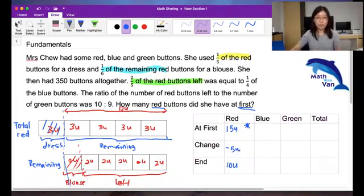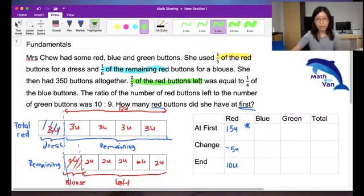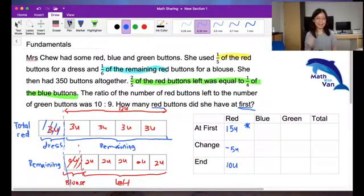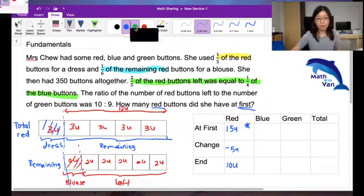What does this two-fifths of the red buttons left was equal to one-quarter of the blue buttons mean? I believe that some of you may be familiar with that. We were told many times that make the numerator the same. So again, always ask yourself or ask your child if they know what does this mean. Do they mean that they have the same number of red and blue buttons as total? Do they mean that they're the same? No. They are just comparing. Just take out a certain number and compare and say this certain number that is used for comparison happens to be two-fifths of the red and one-quarter of the blue.